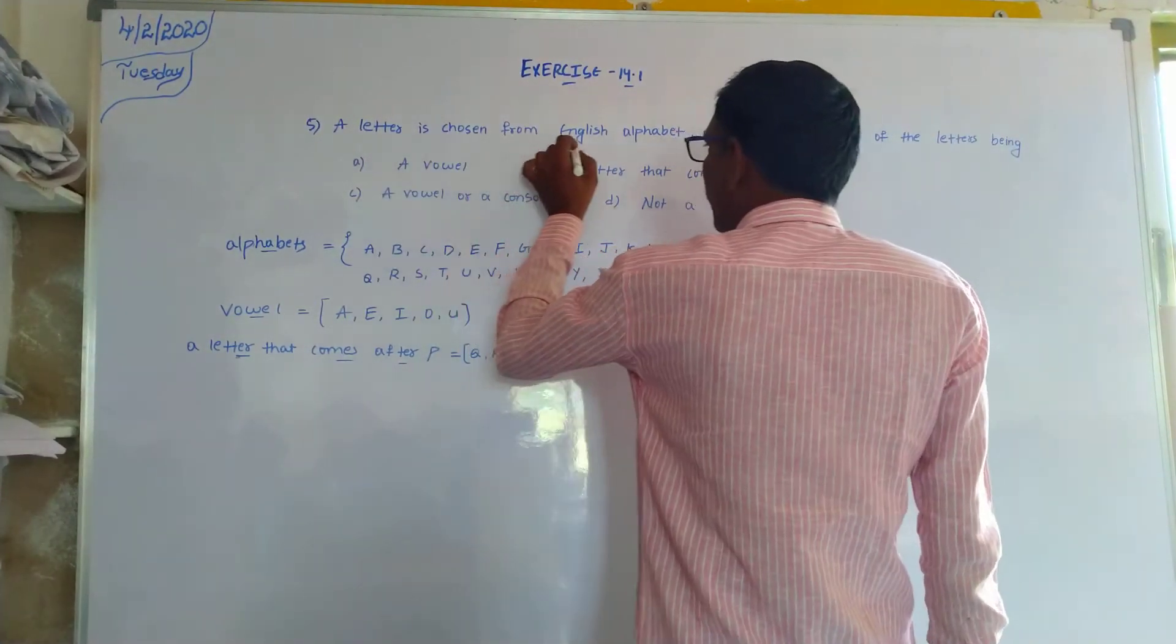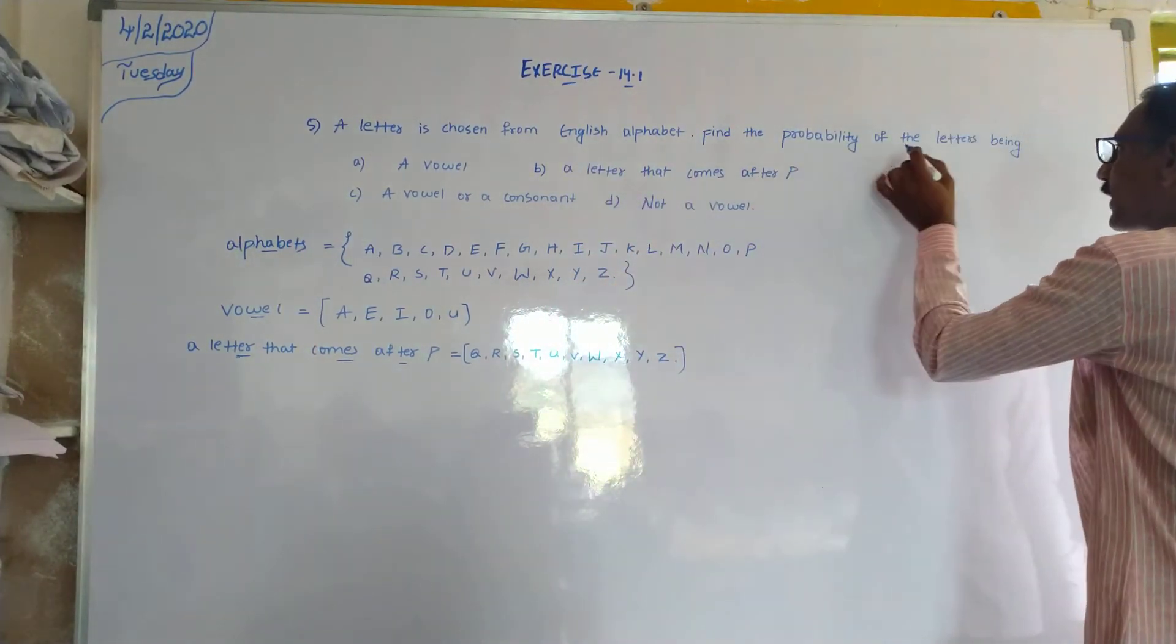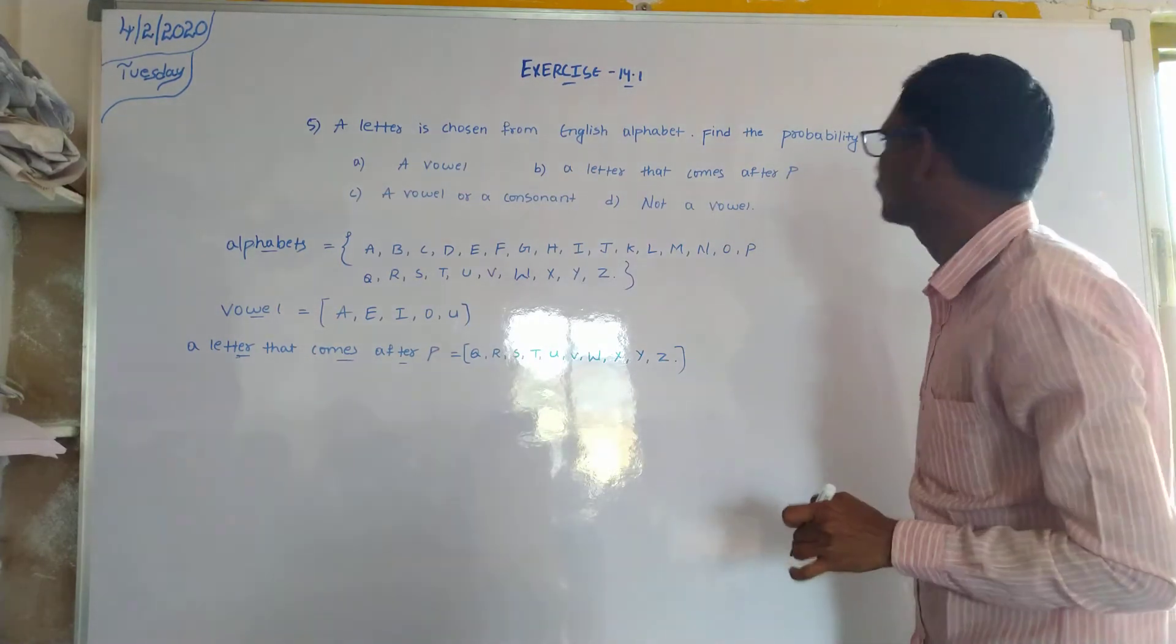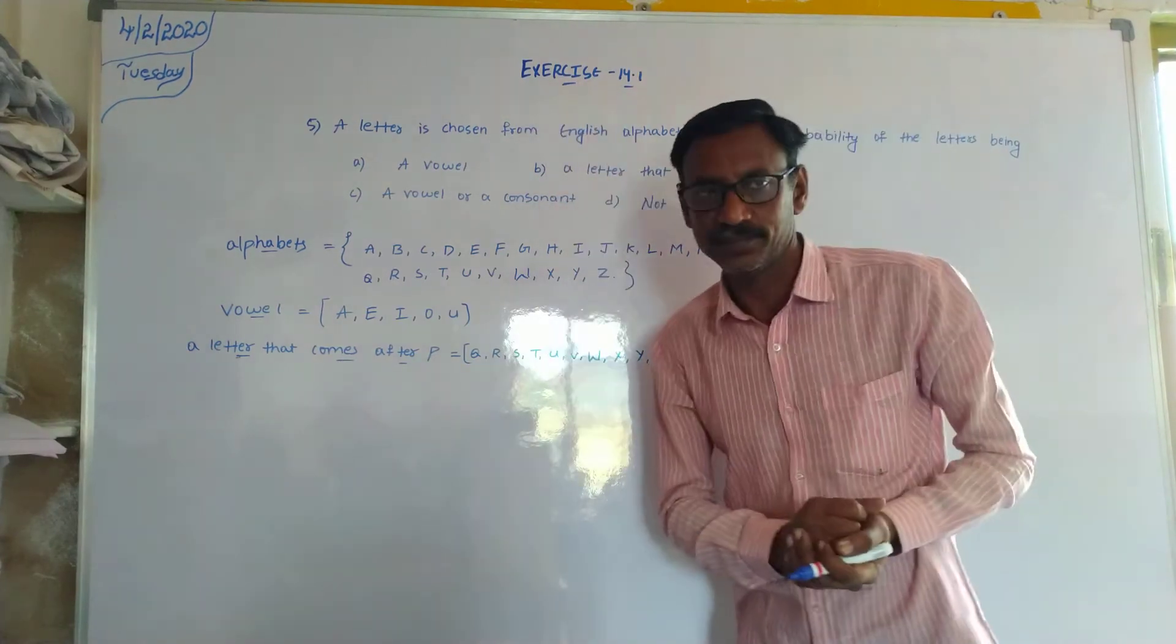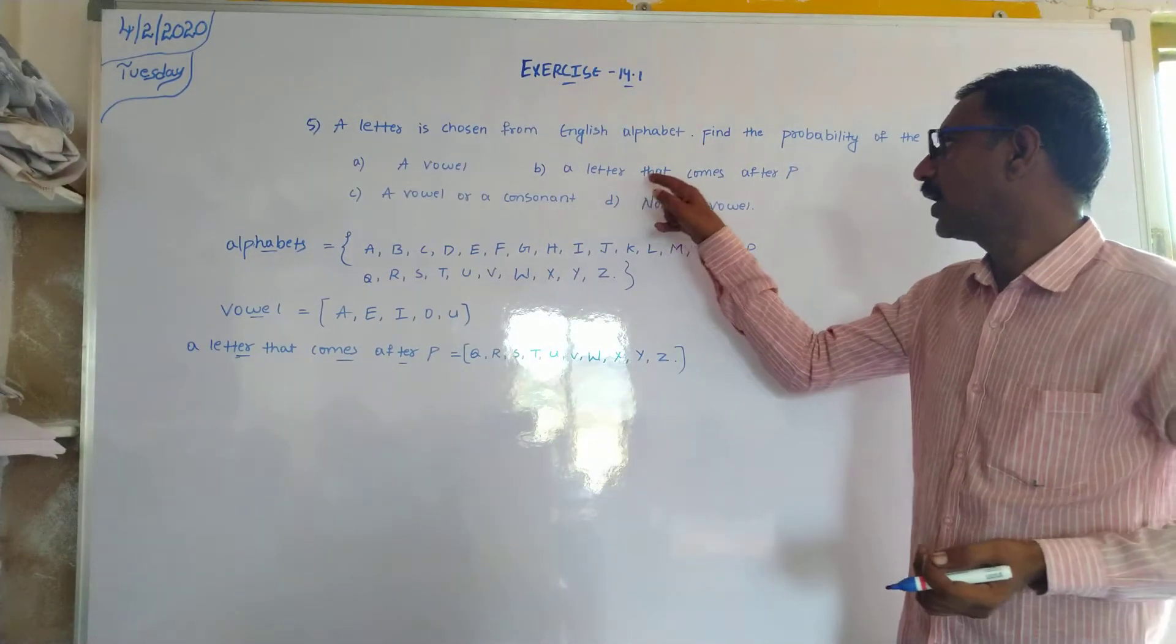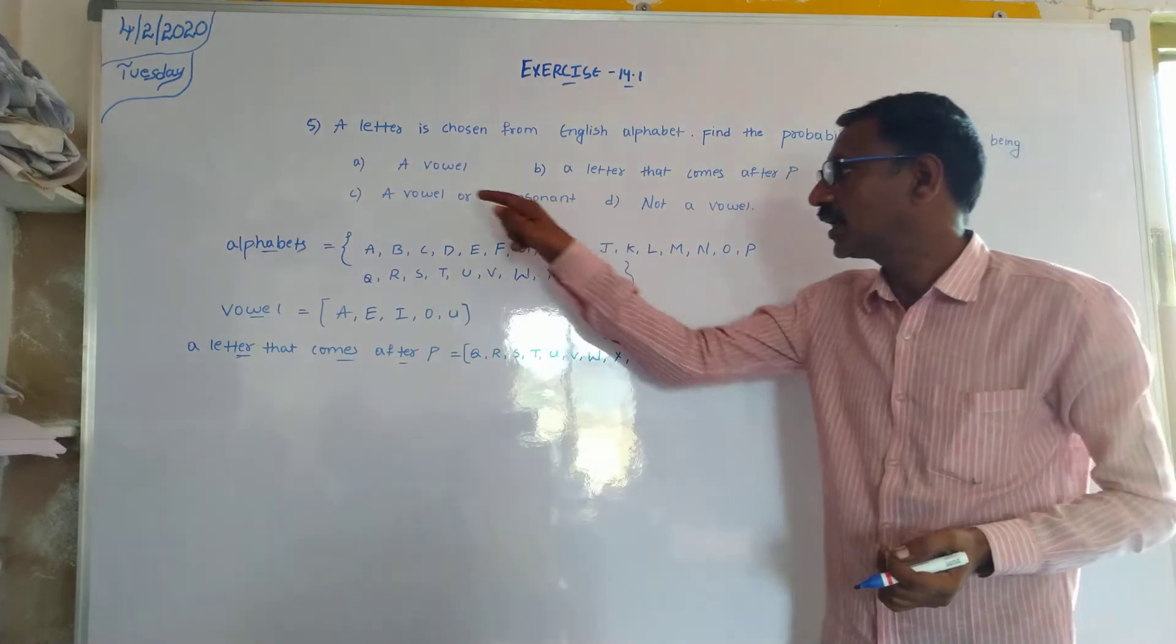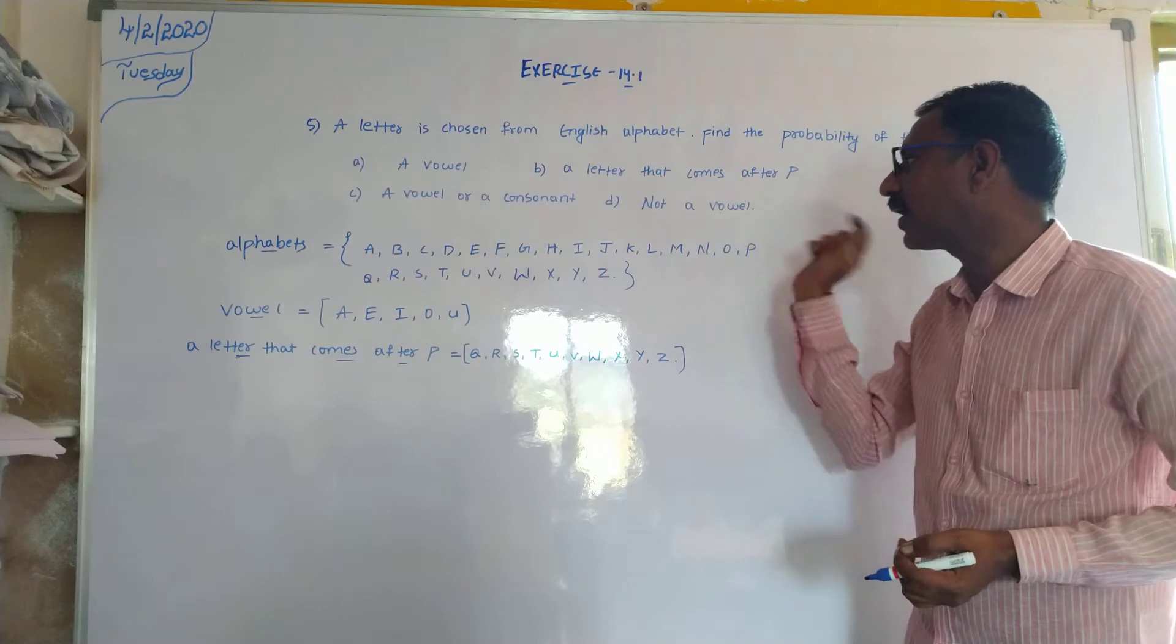A letter is chosen from English alphabets. Find the probability of the letter being a vowel, a letter that comes after P, a vowel or a consonant, or not a vowel.